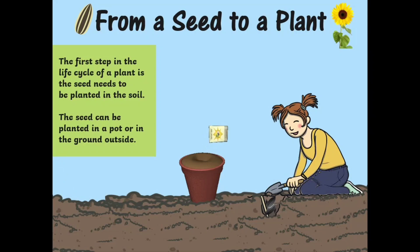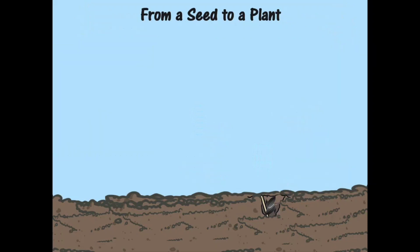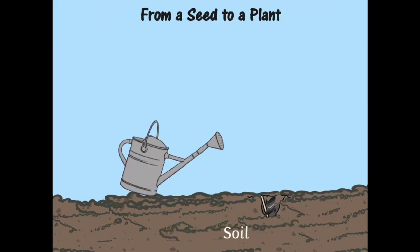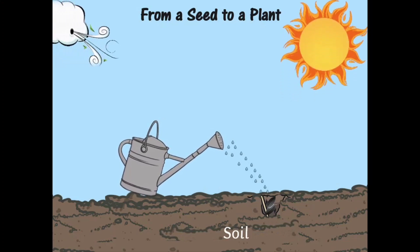The first step in the life cycle of a plant is the seed needs to be planted in the soil. The seed can be planted in a pot or in the ground outside. A plant needs soil, water, sunlight, and air.